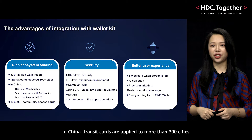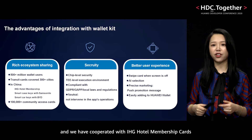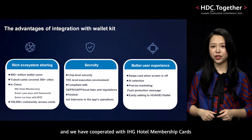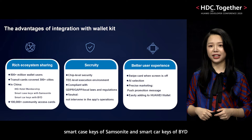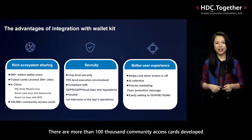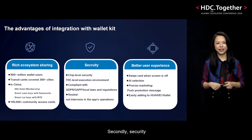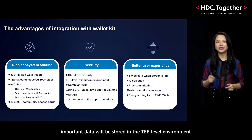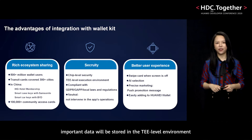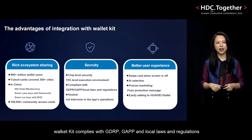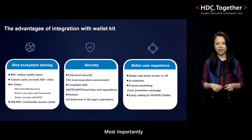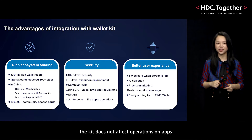In China, transit cards are applied to more than 300 cities, and we have cooperated with IHG hotel membership cards, smart keys of Samsonite, and smart car keys of BYD. There are more than 100,000 community access cards developed — all resources are open to our partners. Secondly, security. We always take security as the first priority. Thanks to secure chips, important data will be stored in the TEE-level environment. WalletKit complies with GDPR, GAPP, and local laws and regulations, and the kit does not affect operations on apps.